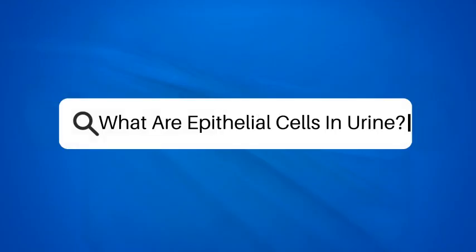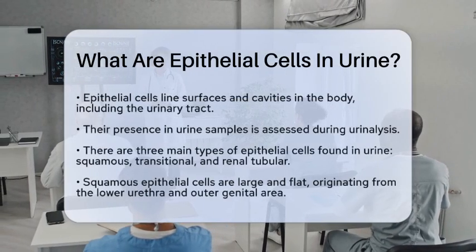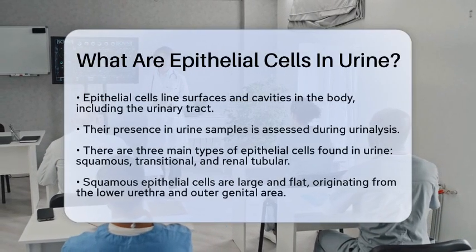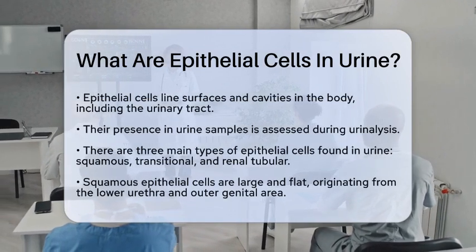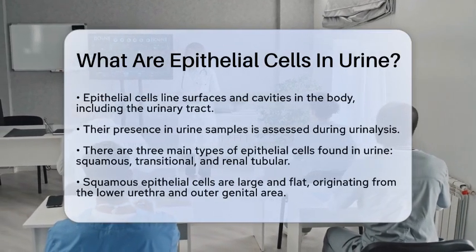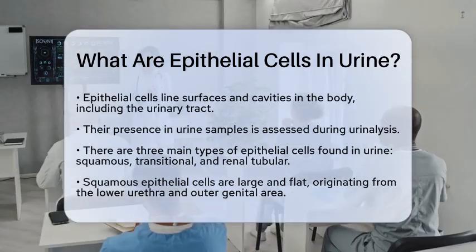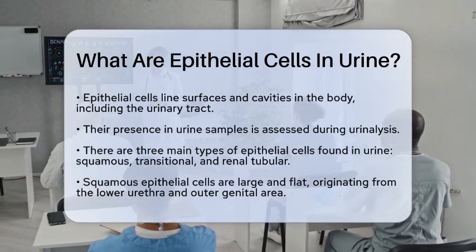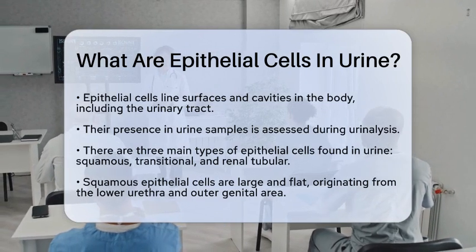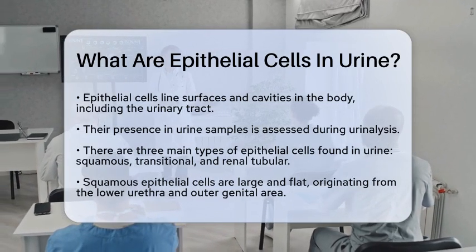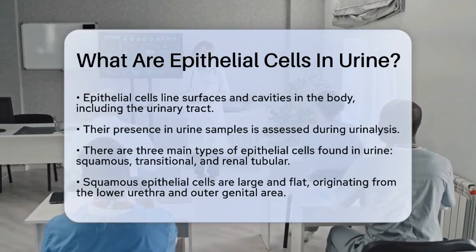What are epithelial cells in urine? Have you ever wondered what those epithelial cells in urine actually mean? Epithelial cells are the cells that line the surfaces and cavities of our body, including the urinary tract. When we perform a urinalysis, we often find these cells in urine samples. But what does their presence really indicate?